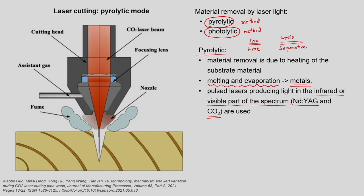On your screen you can see a typical arrangement of laser cutting. We have a substrate and a laser head — the entire assembly of the laser head. It has the cutting head part and a focusing lens. We obtain the CO2 laser beam — a coherent, collimated, monochromatic beam of light from the CO2 lasing medium. This beam of light is impinged on the focusing lens, and through the focusing lens we get a focused beam which is applied on the substrate.